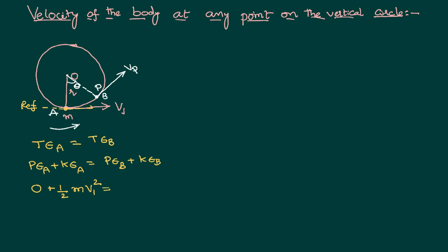Compared to point A, point B is at a certain height H. So it has potential energy MgH relative to the reference point, and it is also moving with some velocity, giving kinetic energy half M Vp squared. Since the value of H is not given, we need to calculate H in terms of the radius and the angle, using the right angle triangle OCB shown in the diagram.